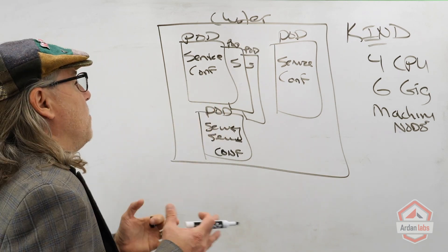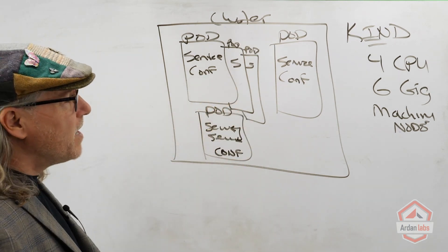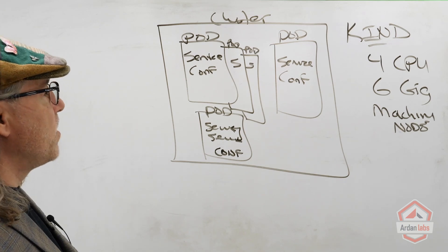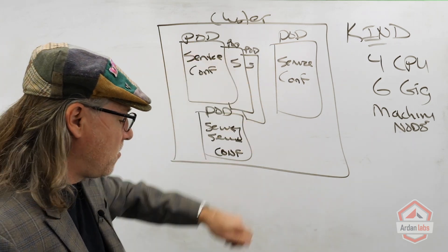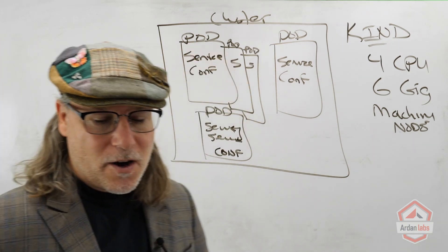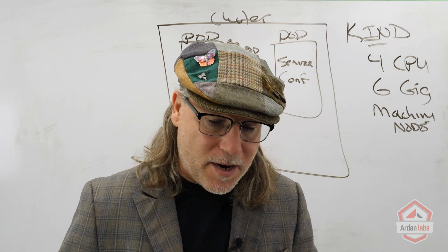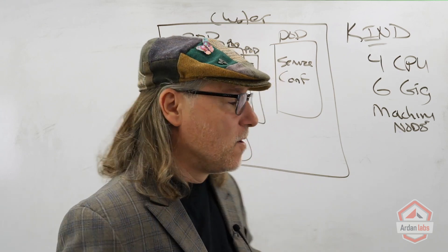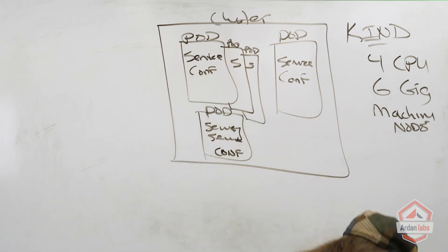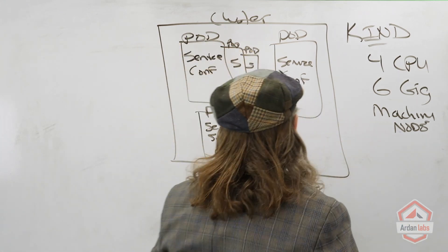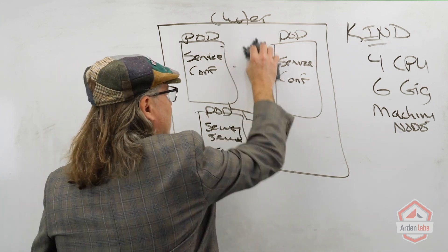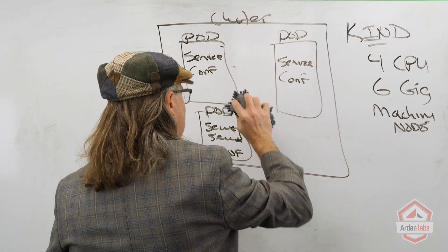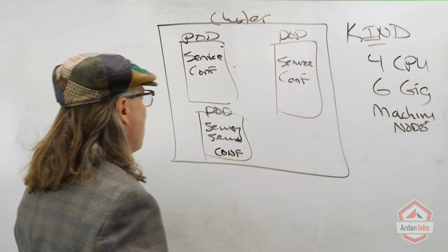In a more production environment, we wouldn't just be running one instance of each pod. We would have multiple instances for that redundancy. On our local dev environment, I want to keep the networking simple, so we're not going to be running any form of replica sets in our dev environment. We're just going to run one instance of our pods for the pods that we want to define.